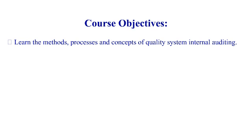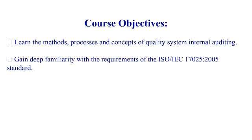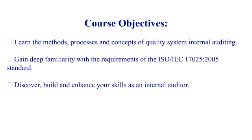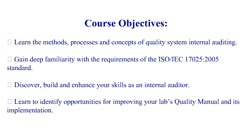Course objectives include learning methods, processes, and concepts of quality system internal auditing. To gain deeper familiarity with the requirements of the ISO IEC 17025-2005 standard. To discover, build, and enhance your skills as an internal auditor. To learn to identify opportunities for improving your lab's quality manual and its implementation.